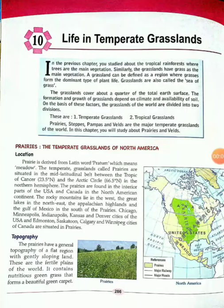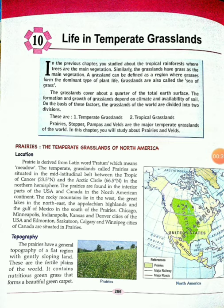Hello students, welcome to our social science class. Today our topic is life in temperate grassland. In the previous chapter we studied about the tropical rainforest, where trees are the main vegetation. Similarly, in this chapter we discuss about the grassland, which has grass as the main vegetation. The grassland is divided into two divisions: temperate grassland and tropical grassland. Prairies, steppes, pampas, and velds are the major temperate grasslands of the world. In this chapter we will study about the prairies and velds only.